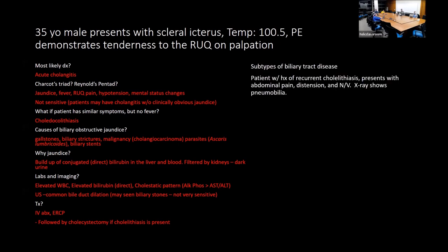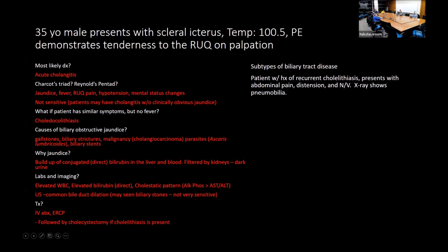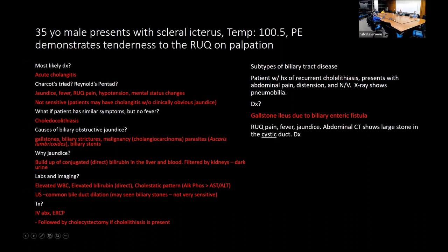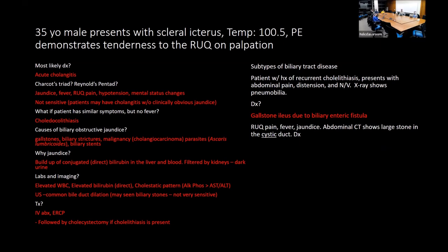Subtypes of biliary tract disease: in chronic inflammation the gallbladder can develop a gallbladder-enteric fistula leading to gallstone ileus. Mirizzi syndrome occurs when a large stone or mass in the cystic duct compresses the hepatic duct externally, causing signs of obstruction.